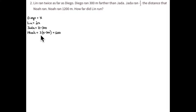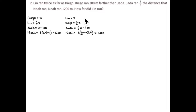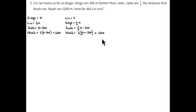So Noah is three times (x minus 300), and that equals 1,200 meters. If you make Lin equal to x, then Diego is one-half of Lin's run, or one-half x, and Jada is 300 meters less than Diego, so it's one-half x minus 300, and Noah is three times farther than Jada.